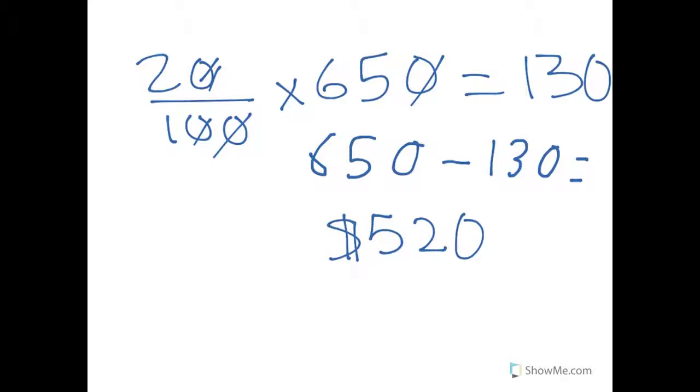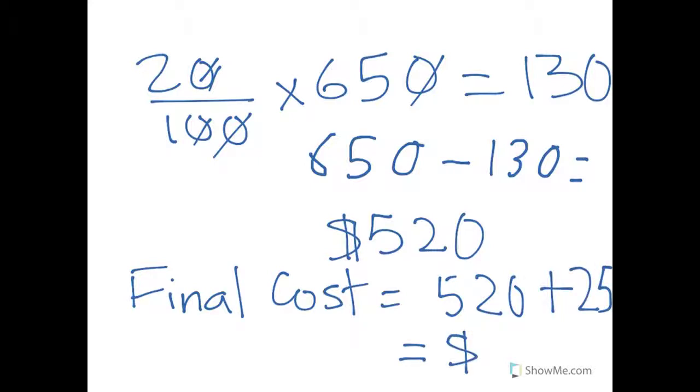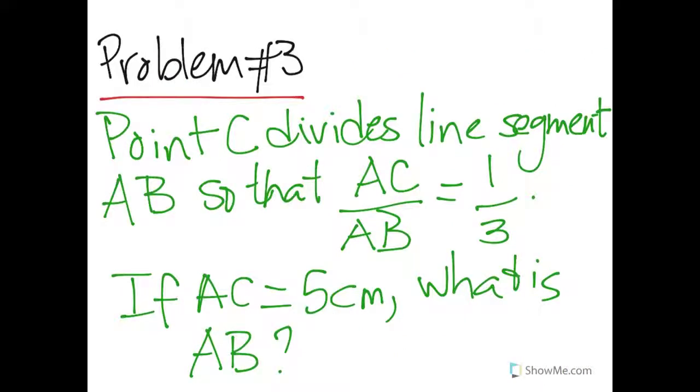Then we have to add $25. So $520 plus $25, and that equals of course $545. So that was again a simple problem. We will soon be moving to harder problems.